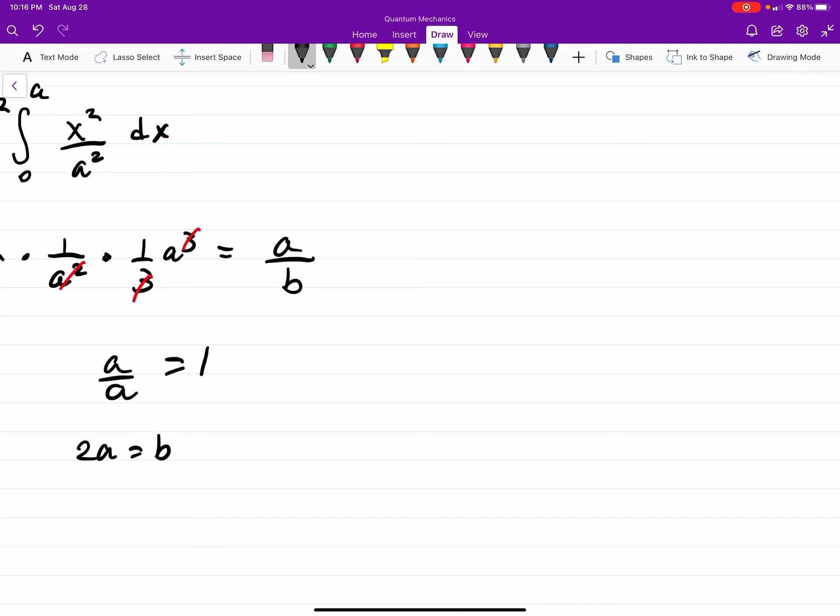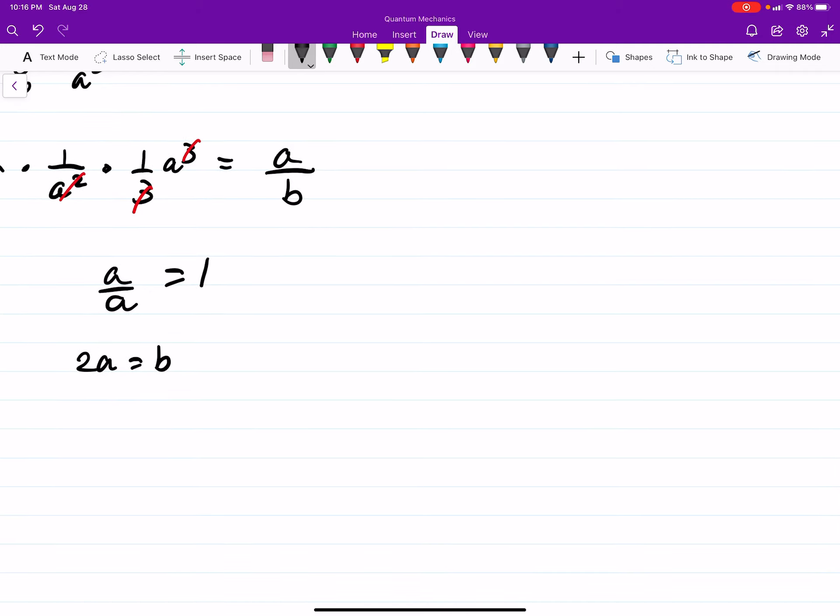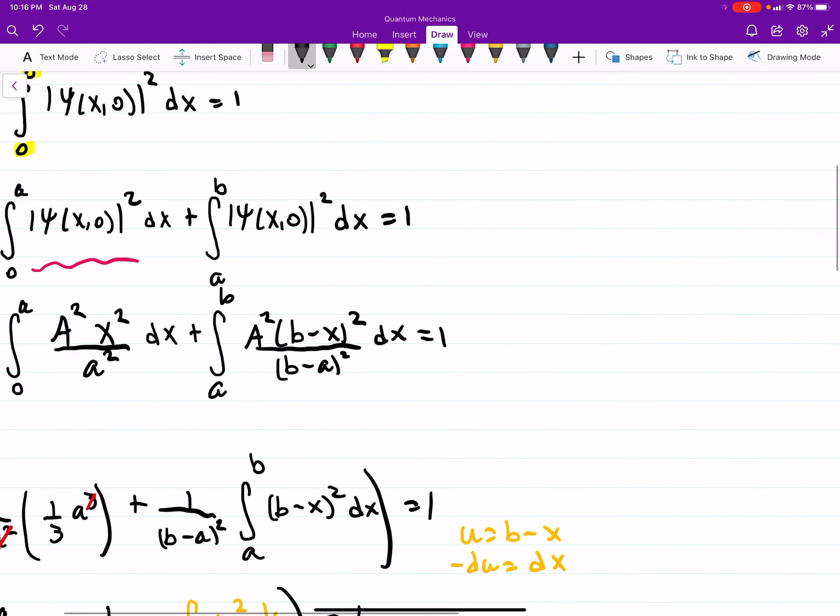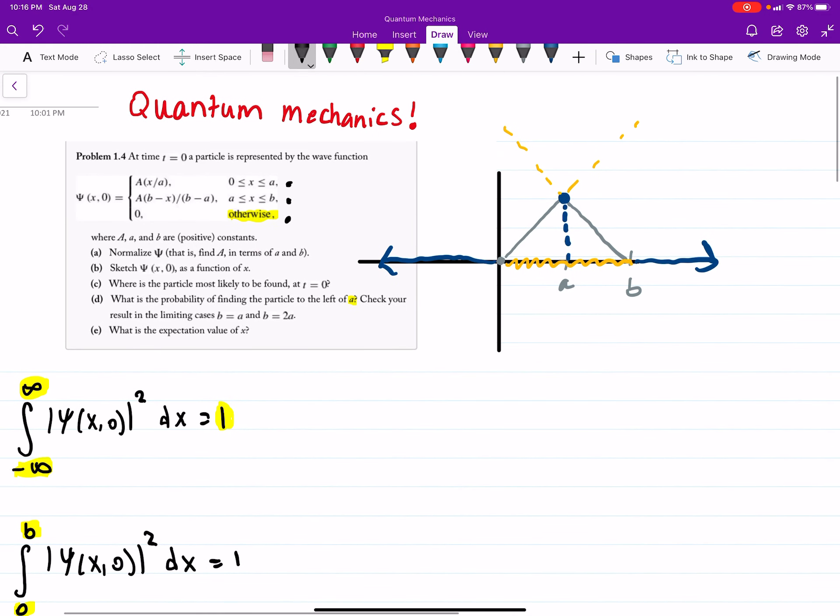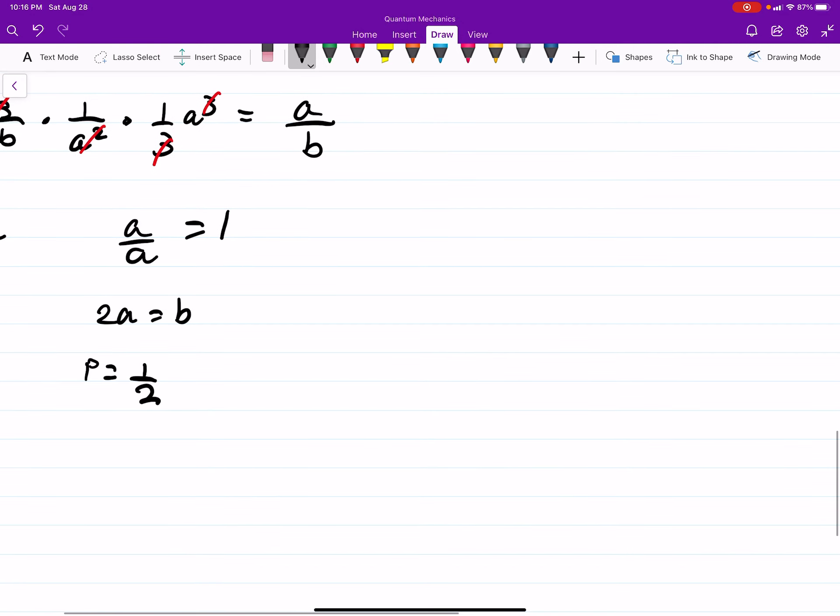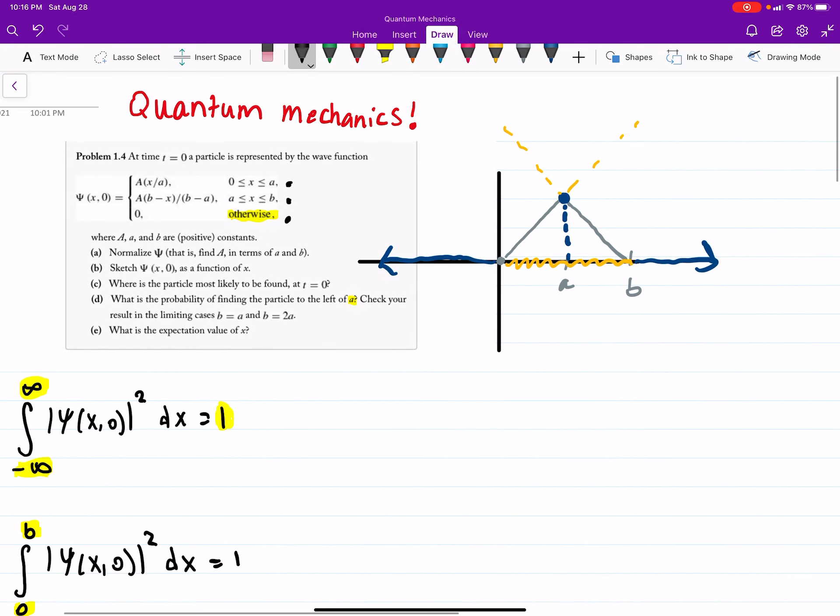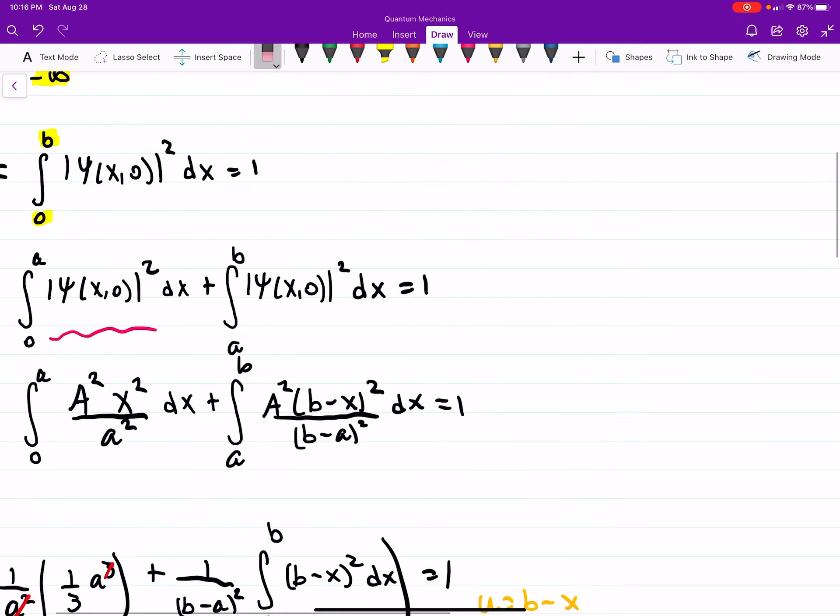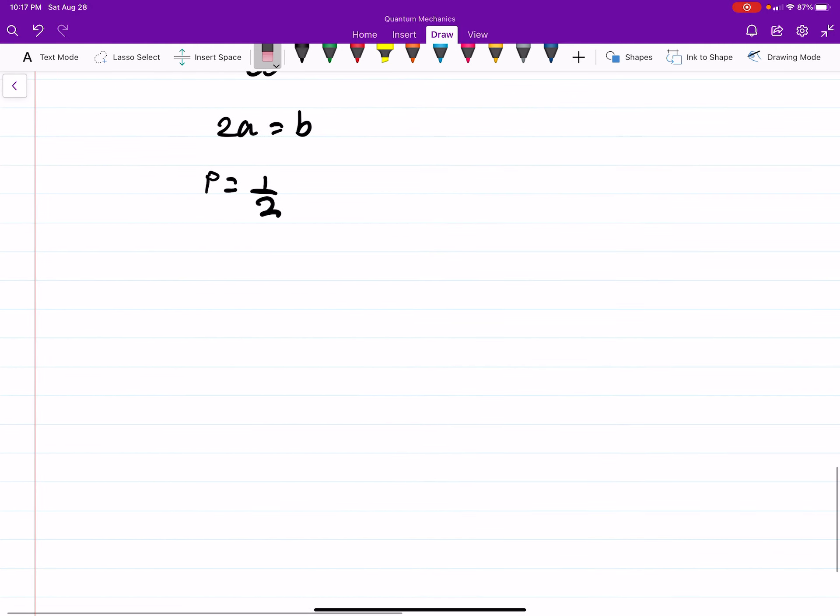And then the other one is when 2a equals b. Okay so if you were to plug that in, a divided by 2a that gives a probability of one half. In other words a 50% chance. And so that is when we said 2a is equal to b. In other words when a is half of b, in other words essentially right in the middle. Again makes sense because that's about 50. I mean the graph can be misleading but it works out.